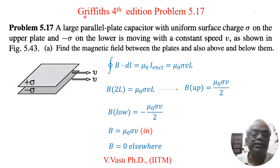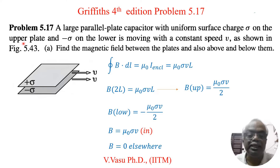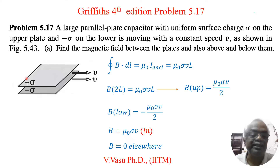We will solve problem 5.17 of Griffith's 4th edition, Introduction to Electrodynamics. Problem 5.17 involves a large parallel plate capacitor with uniform surface charge sigma on the upper plate and minus sigma on the lower plate, moving with constant speed V. This problem consists of three parts. Part A is to find the magnetic field between the plates and also above and below them.